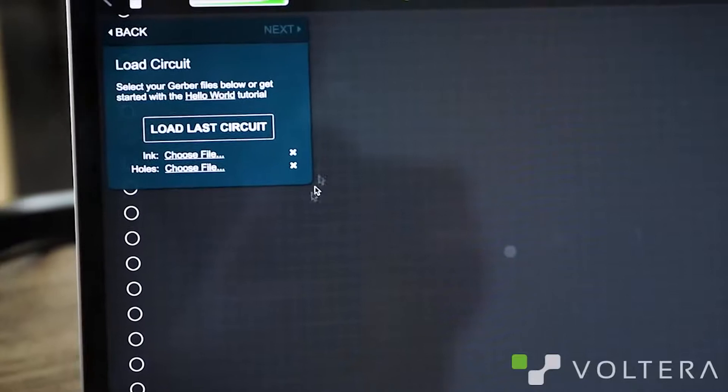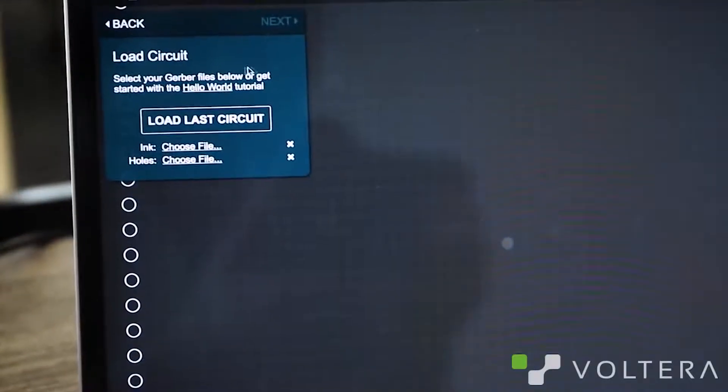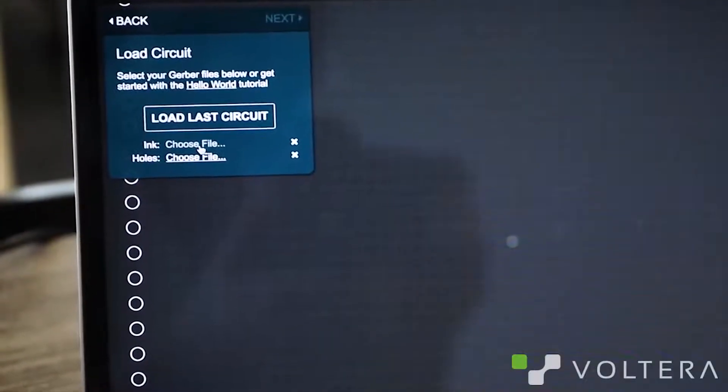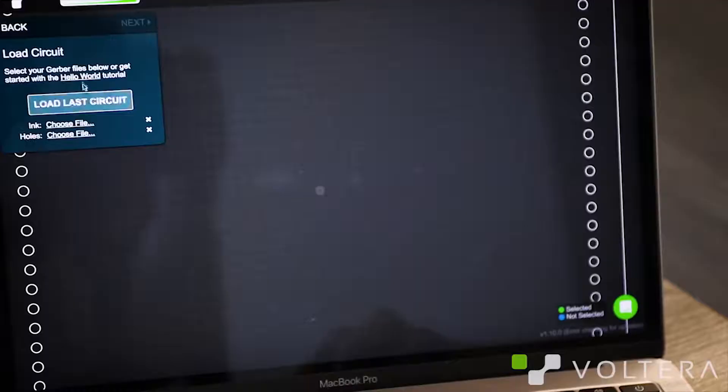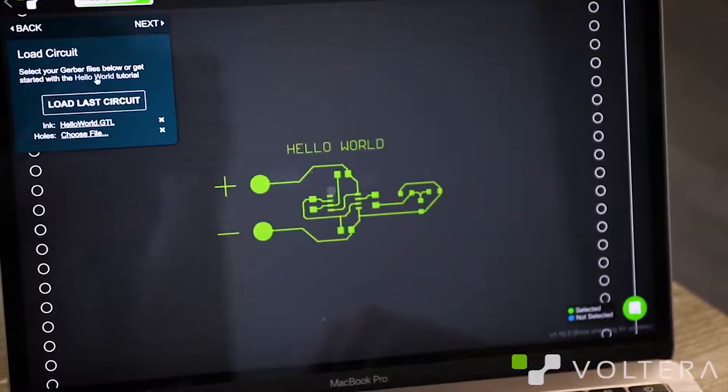Next, we load our circuit. We're printing the Hello World board, which is right in the software. But if we wanted to load a custom design, we could pull it right from the hard drive. You can also load the last circuit you were printing. That's just a personal project. You can ignore that. What we're actually going to print is the Hello World.